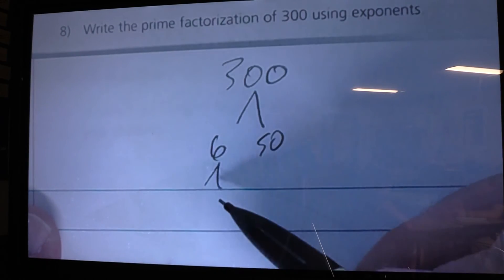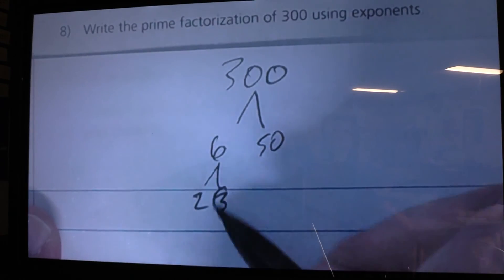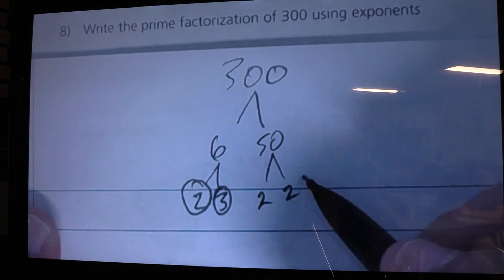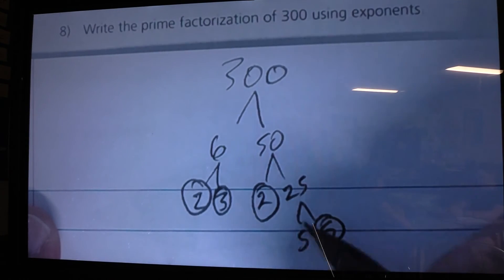Now, 6 will factor down to 2 and 3. And then 50, I can do that as 2 and 25. And 25 is 5 and 5.